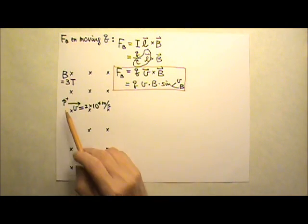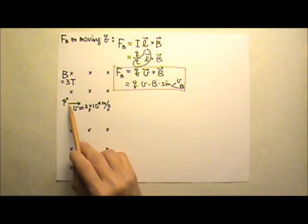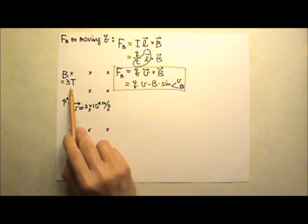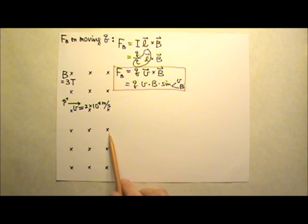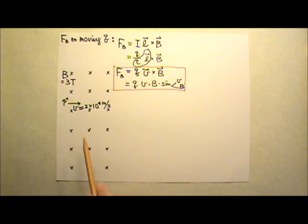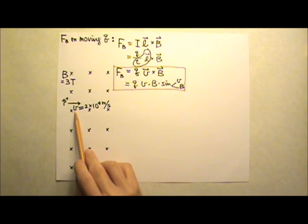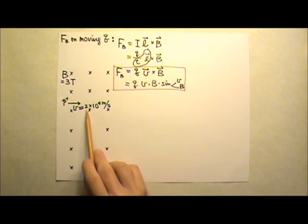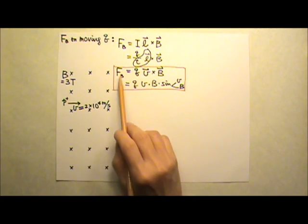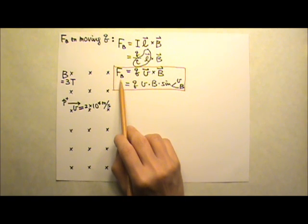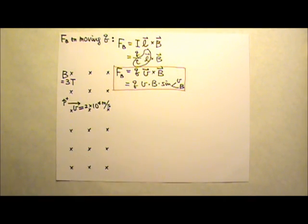For example, a proton is projected into a 3 tesla magnetic field. The axis over here tells us that the direction of the magnetic field goes into the paper. The speed of the proton is 2 times 10 to the fourth meters per second. Find the magnitude and the direction of the magnetic force acting on this proton.